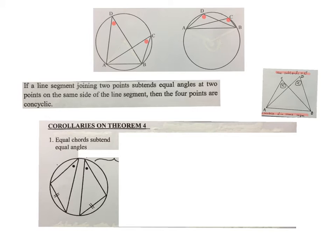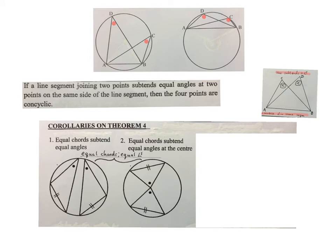Now lastly, we want to look at the corollaries of theorem 4. In other words, that means it is reasoning you can use on your riders without proving them. The first one says that if we have a circle with two equal chords, then the angles opposite those chords will be equal. Equal chords subtend equal angles. And the reason I will write is equal chords, equal angles.